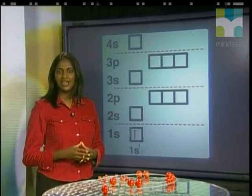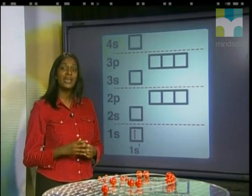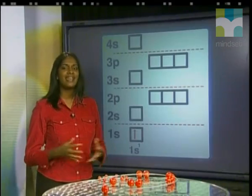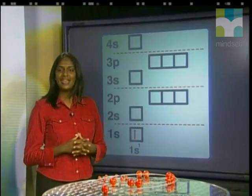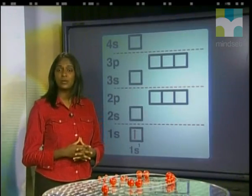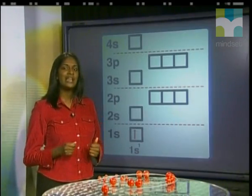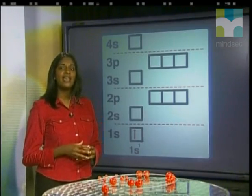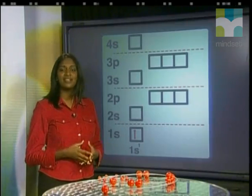These orbitals show where electrons of particular energy are most likely to be found. Every orbital can hold a maximum of two electrons. When two electrons are placed in one orbital, they have an opposite spin, so they do not repel each other. To show this opposite spin, we draw our arrows in opposite directions.